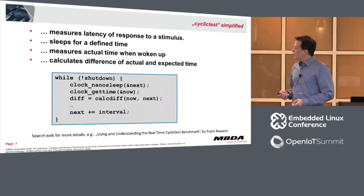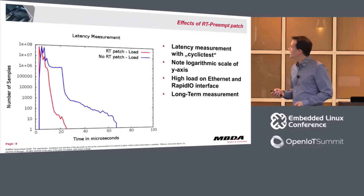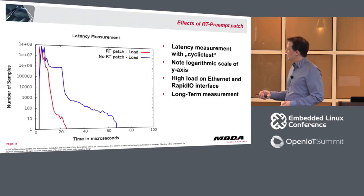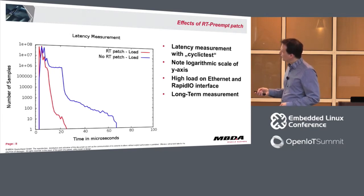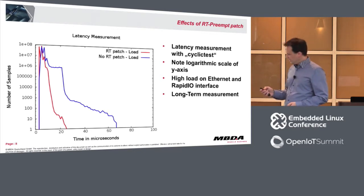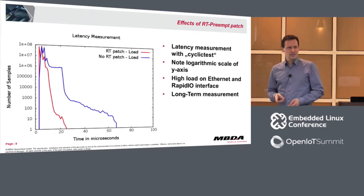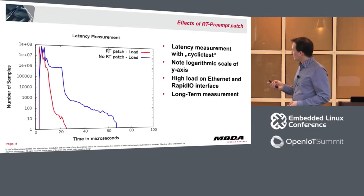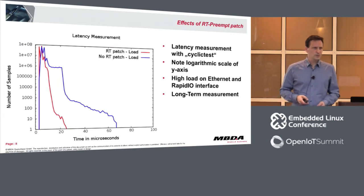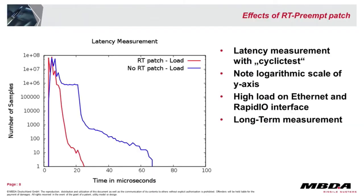We started cyclic test on the old single-core processor system, and this is the histogram generated with GnuPlot. On the x-axis is time in microseconds; on the y-axis is the number of samples — note this is a logarithmic scale, not linear. We put the system under high load, which is necessary for latency measurements since no one deploys an idle system. And of course it's necessary to do long-term measurements — not minutes, but days, weeks, or better, months — to catch infrequent outliers.